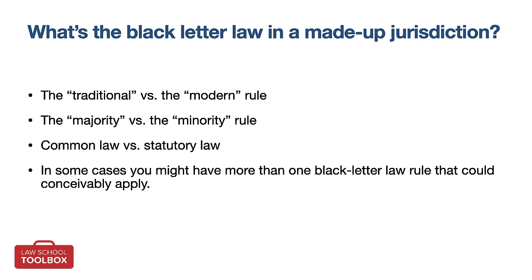For example, consider a hypothetical jurisdiction called Smithville in the state of Smith. You know nothing about the choices the legislators and judges of Smith might have made, so you'll need to analyze legal issues in light of the traditional versus modern rule. Consider contributory negligence, which is traditional, versus comparative negligence, which is modern. Under the traditional doctrine, an injured victim who was at all at fault couldn't recover. Finding this unfair, the law in some places evolved so that a slightly at-fault victim could recover for the portion of the incident that wasn't her fault. If you're not told which rule Smith uses, you'll want to discuss both on the exam.